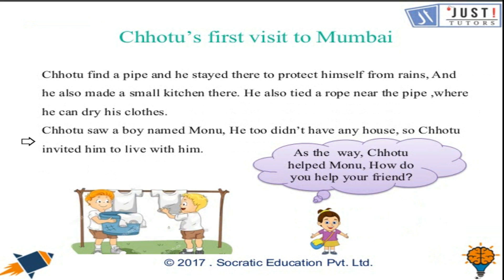Chotu found a pipe and stayed there to protect himself from the rains. He also made a small kitchen there where he could cook for himself, and tied a rope near the pipe where he could dry his clothes. While living there, he saw a boy named Monu who also didn't have any house, so he decided to invite him to live with him. This means we should always help our friends whenever they need our help.